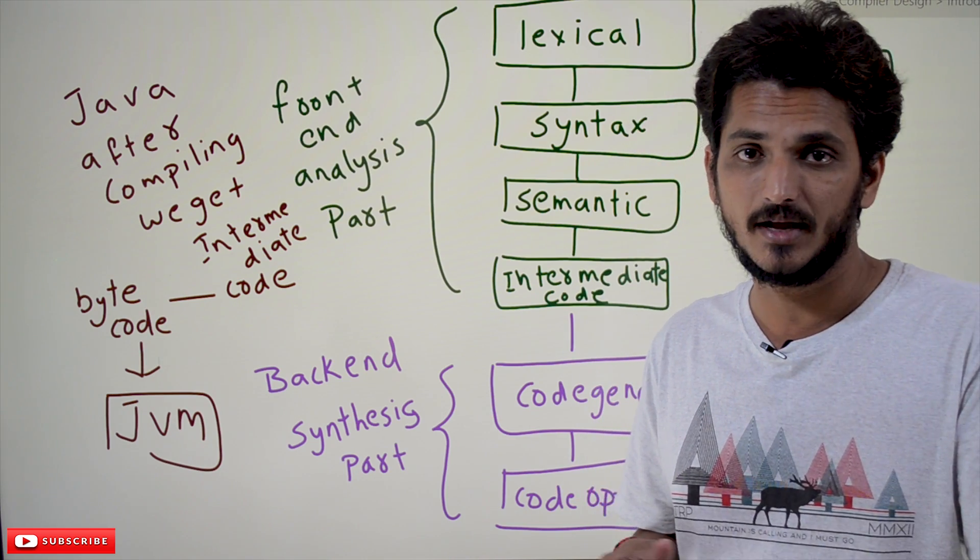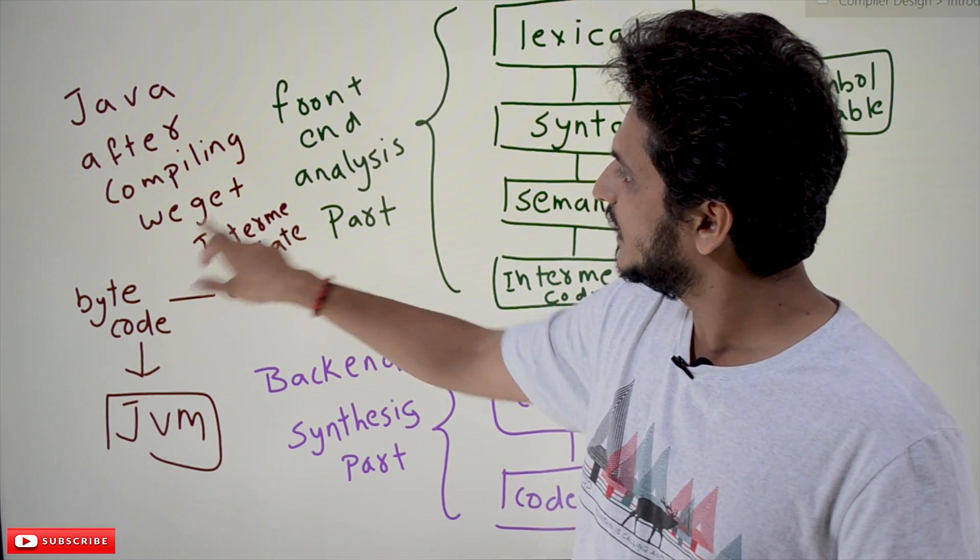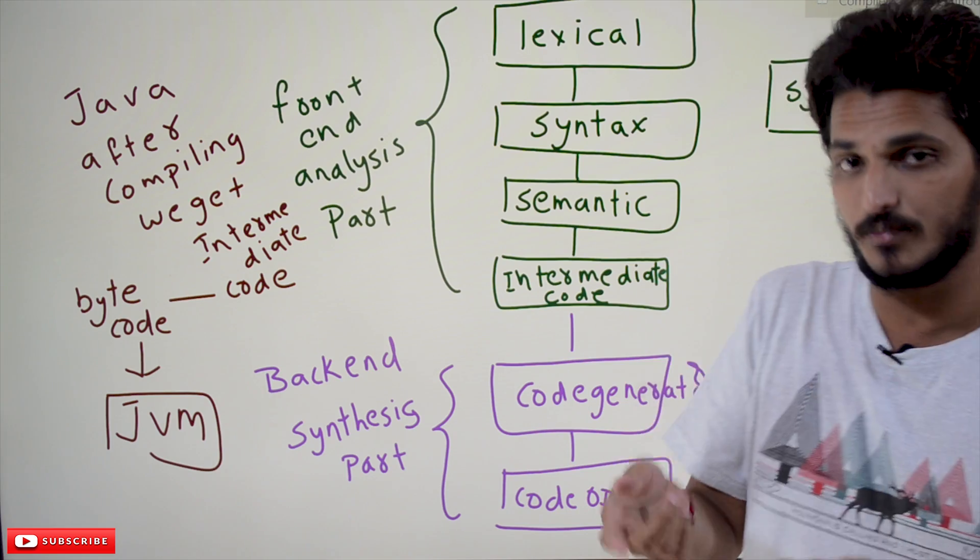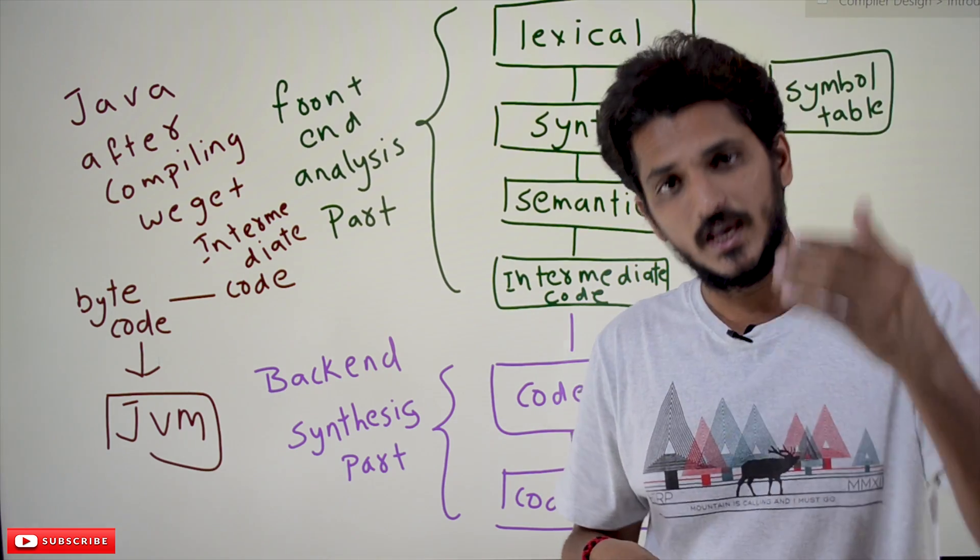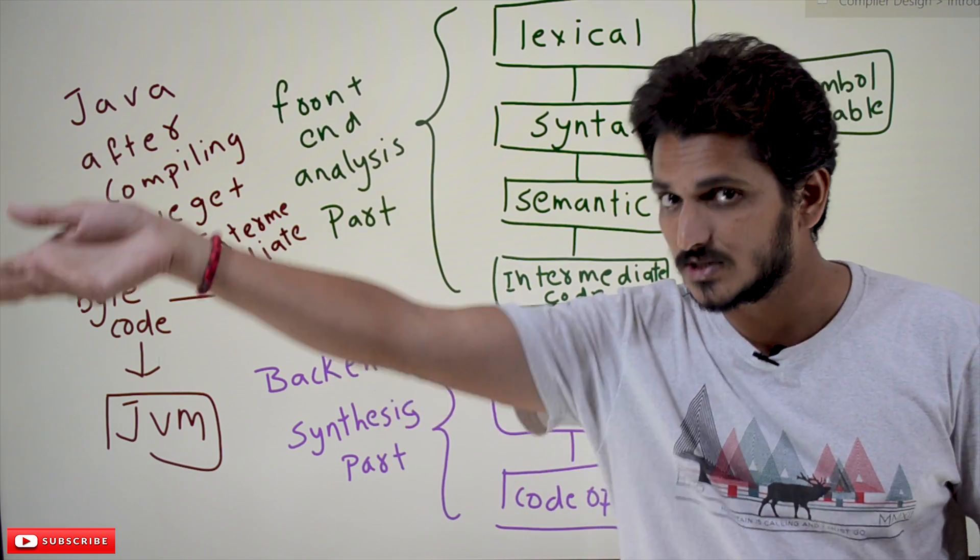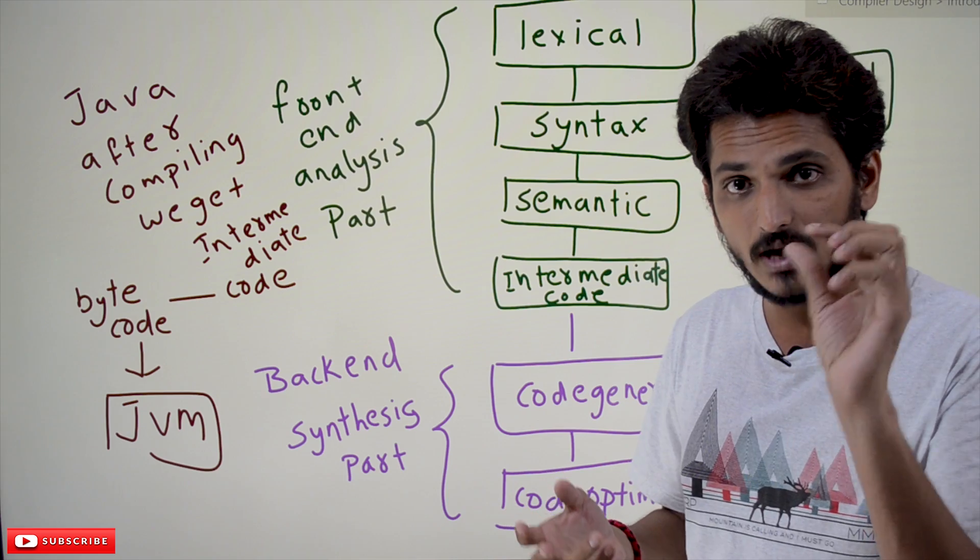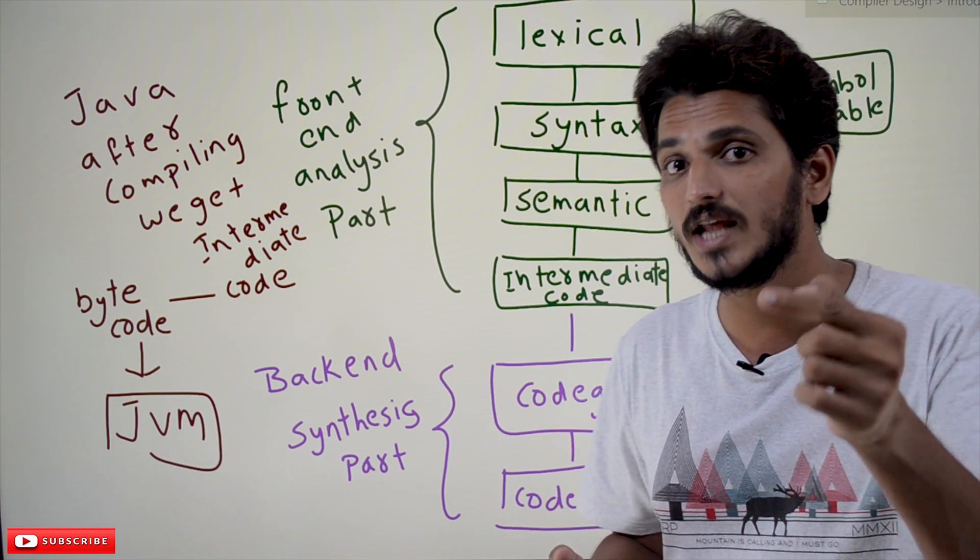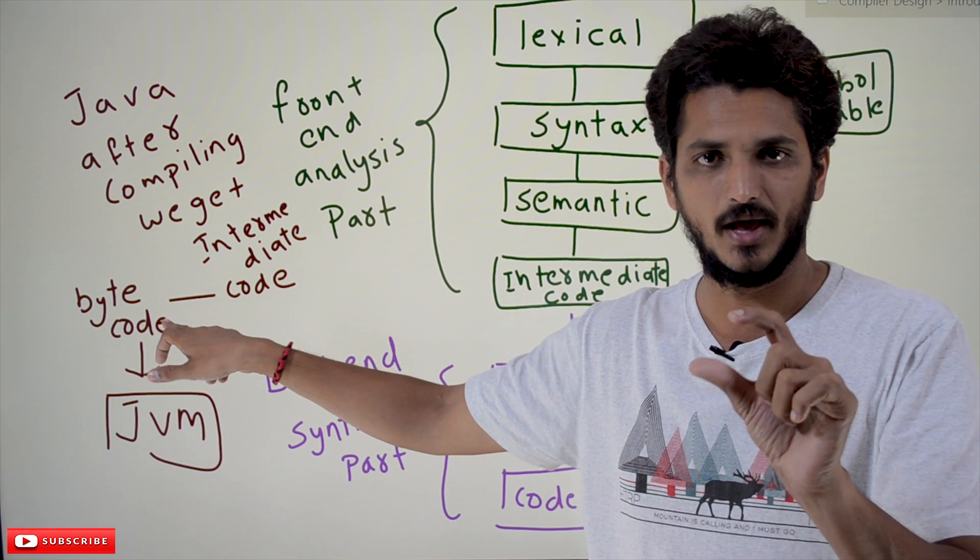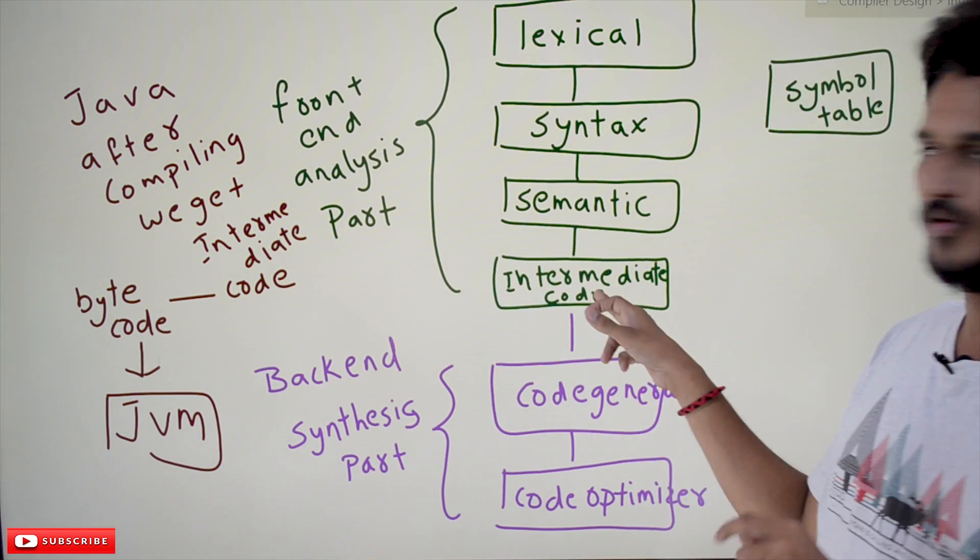Java, after compiling, we get intermediate code. Whenever you compile the Java program—in your system, in any other system, in a server—after compilation it generates an object code that we call bytecode. That is the intermediate code which is generated. You compile it anywhere and get that intermediate code.